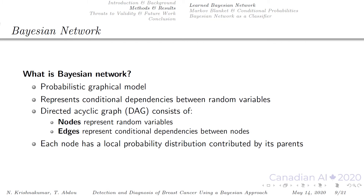So what is a Bayesian network? It is a probabilistic graphical model that represents conditional dependencies between random variables. It is represented by a directed acyclic graph consisting of nodes that represent random variables and edges that represent conditional dependencies between these nodes. Each node has a local probability distribution contributed by its parents.